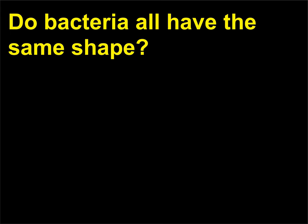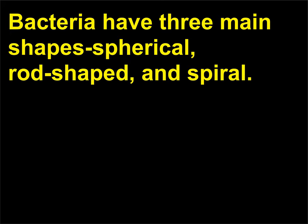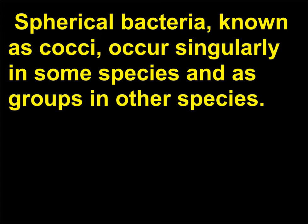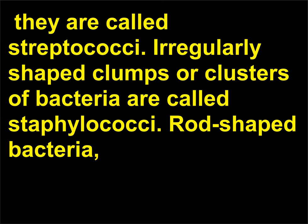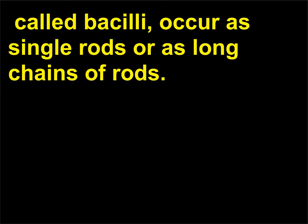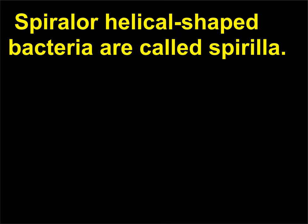Do bacteria all have the same shape? Bacteria have three main shapes: spherical, rod-shaped, and spiral. Spherical bacteria, known as cocci, occur singularly in some species and as groups in others. Cocci have the ability to stick together and form a pair — Diplococci. When they stick together in long chains, they are called Streptococci. Irregularly shaped clumps or clusters of bacteria are called Staphylococci. Rod-shaped bacteria, called bacilli, occur as single rods or as long chains of rods. Spiral or helical-shaped bacteria are called Spirilla.